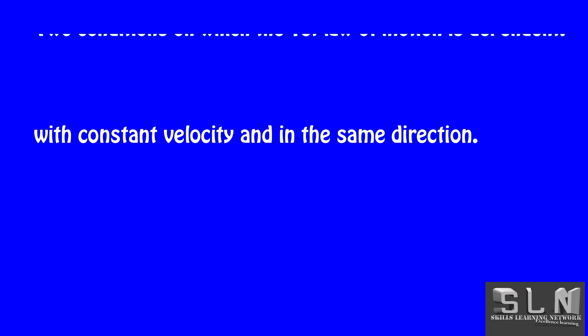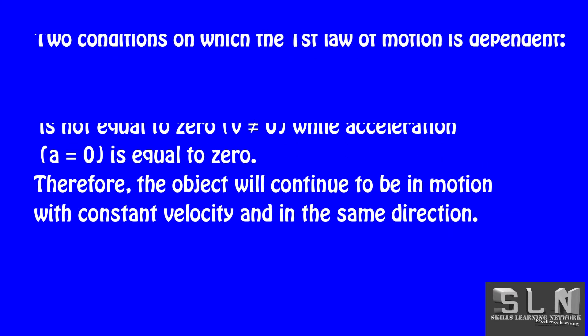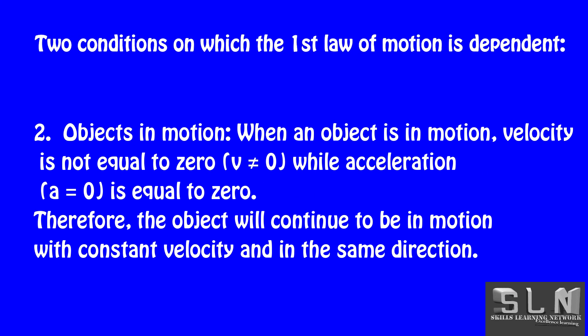Another condition: object in motion. When an object is in motion, velocity is not equal to zero, while acceleration is equal to zero. Therefore, the object will continue to be in motion with constant velocity and in the same direction.